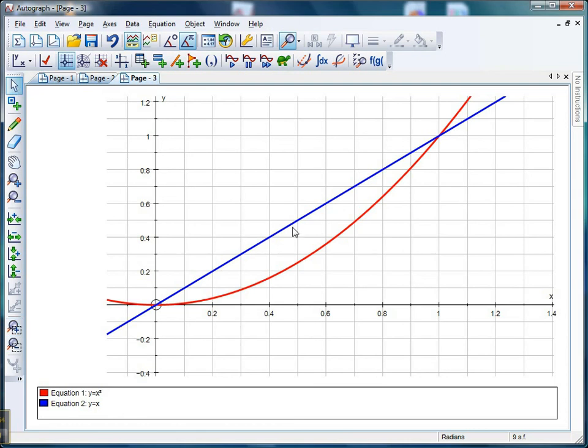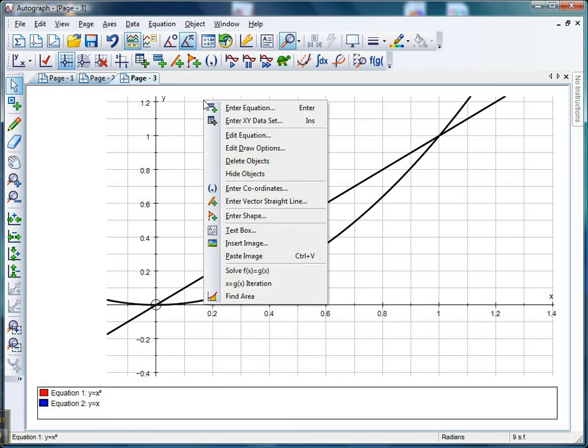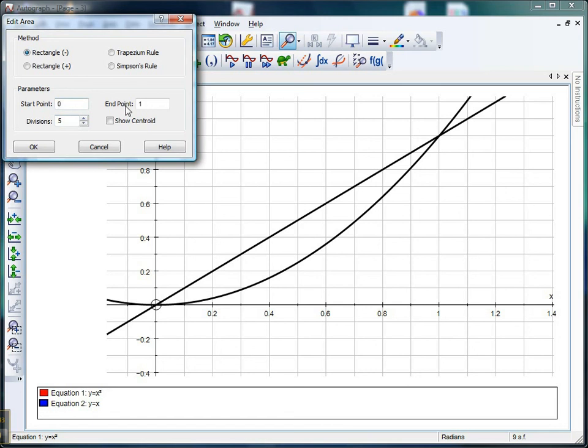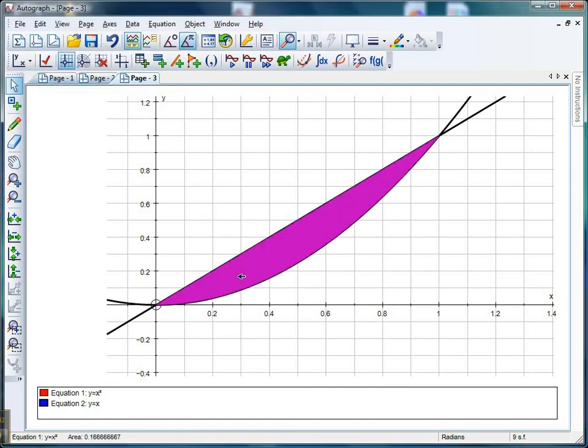Now I'm going to tell Autograph that I'd love the area between that curve and that line. Both better be selected. Right click and hopefully you'll get find area. Again it's the same deal. Choose your start point and end point. I'm going to go 0, 0 where they cross there, and 1, 1 where they cross there. A bit of Simpson's rule, a bit of 200 divisions, click OK, and there's my area there.